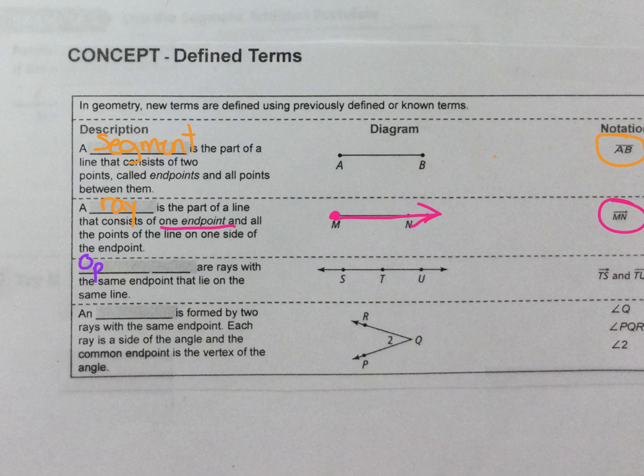Opposite rays are rays with the same endpoint, so right here, and lie in one ray that goes that way and one ray that goes this way and it makes a line. An angle is formed by two rays with the same endpoint. Each ray is a side of the angle.